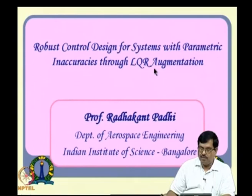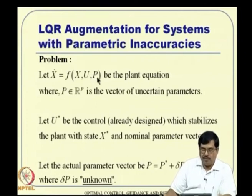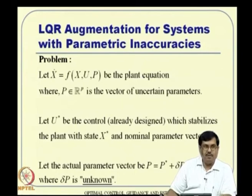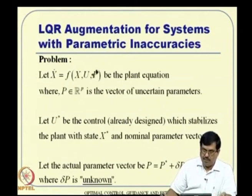First is robust control design for systems with parametric inaccuracies through LQR augmentation. Normally we write x-dot = f(x, u) for a nonlinear system, assuming parameter values are constant and known. In general, we can write x-dot = f(x, u, p), where p is the parameter vector. For example, if you have a moving mass, the equation is m*x-double-dot = F, so m is a parameter. Similarly, for a rotating body the moment of inertia is a parameter, and for an aerodynamically controlled aircraft the aerodynamic force and moment coefficients are parameters.